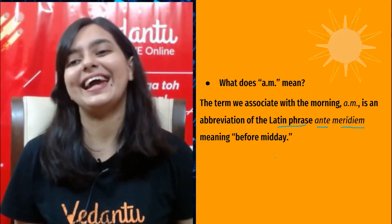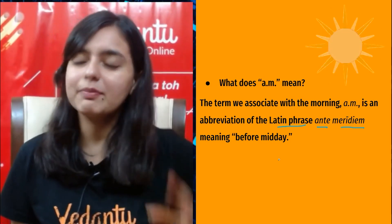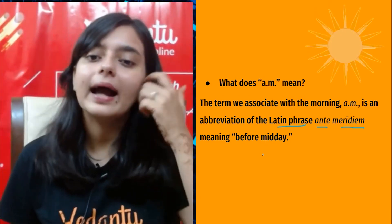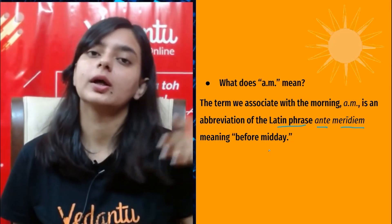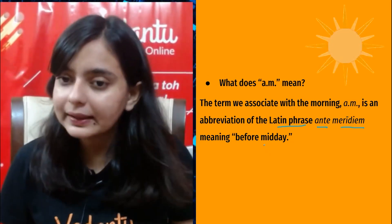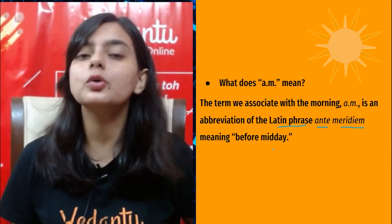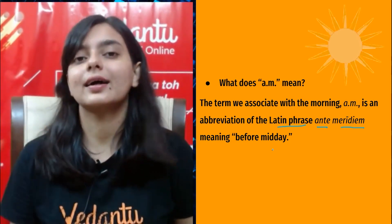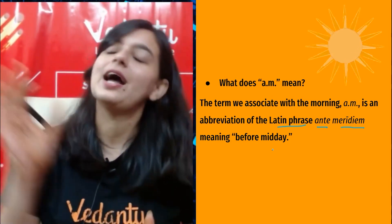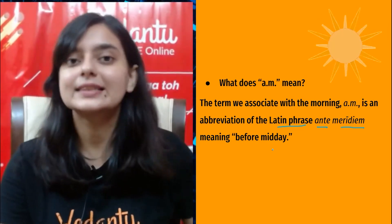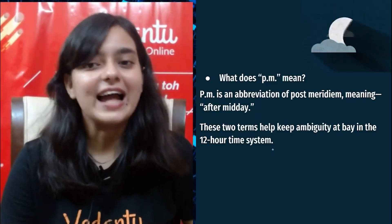Ante meridiem means 'before midday.' So that's why when we refer to any time which is before midday, we always use AM. For example: 'I'll meet you in class at 6 AM,' which means six in the morning.